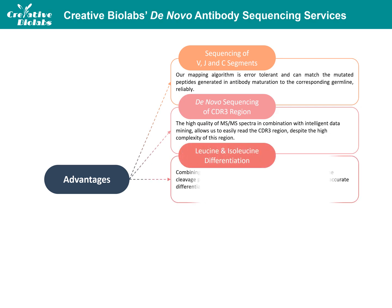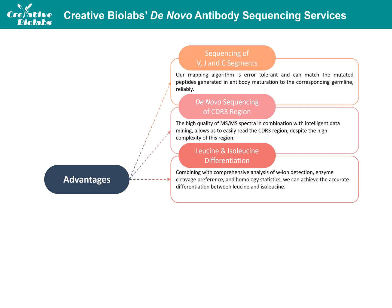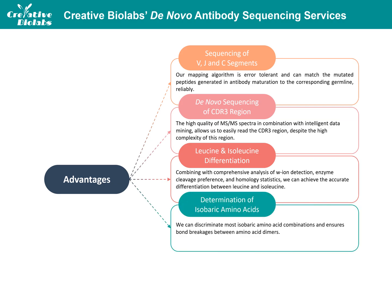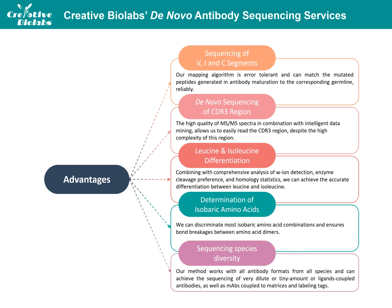To differentiate between leucine and isoleucine, we combine comprehensive analysis of W-ion detection, enzyme cleavage preference, and homology statistics to achieve accurate differentiation. To determine isobaric amino acids, we can discriminate most isobaric combinations and ensure correct breakage between amino acid dimers. For example, glutamine can be distinguished from lysine, and asparagine can be distinguished from double glycine. Leucine will be predicted from germline sequences and the cutting frequency of chymotrypsin. Our method works with all antibody formats from all species and can achieve sequencing of very diluted or ligand-coupled antibodies, as well as monoclonal antibodies coupled to matrices and small-group labeled antibodies.